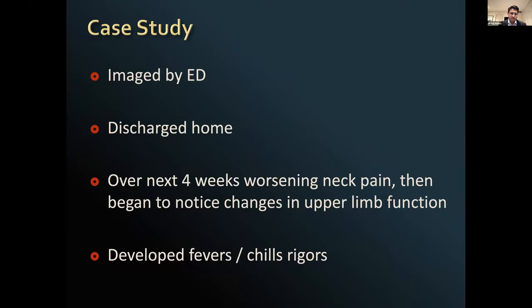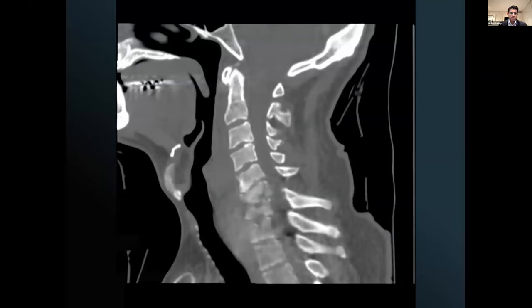When he got home, he didn't get better. He gradually got worse with increasing neck pain, began to notice some changes in his upper limb function, and then started to develop fevers, chills, and rigors. With this deterioration, he went back to the emergency department and was re-imaged. This was his progress CT scan, and there had been a marked change.